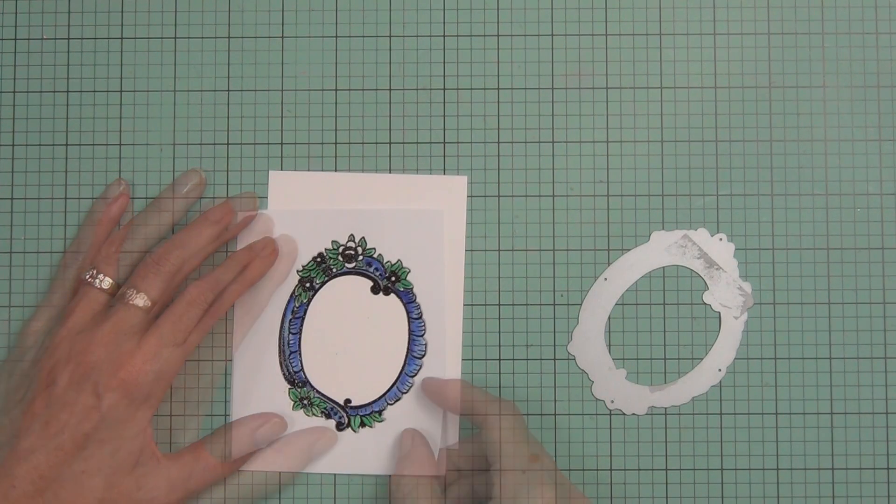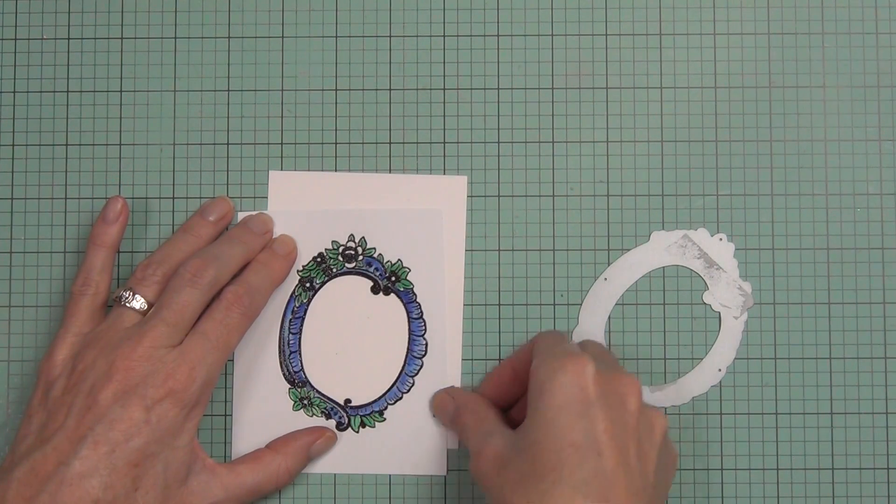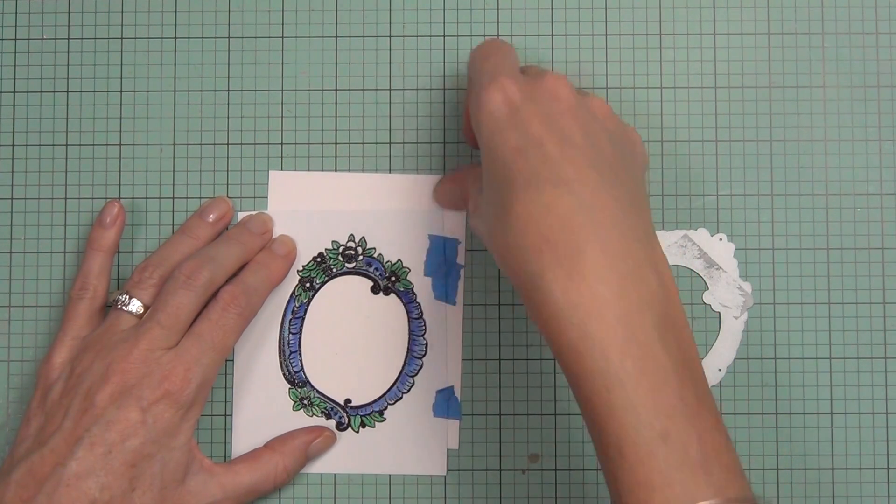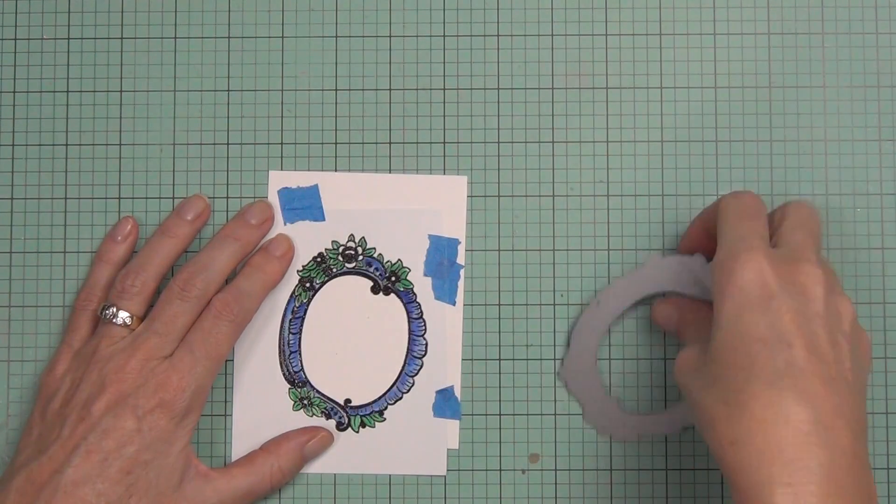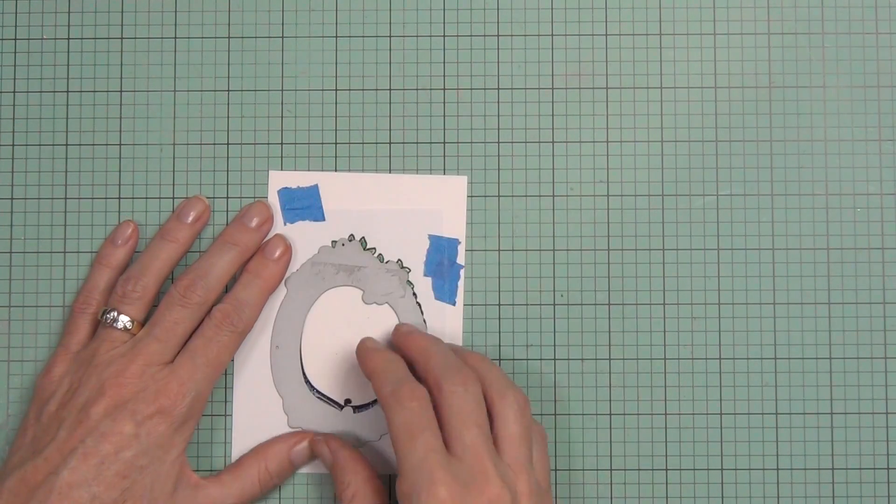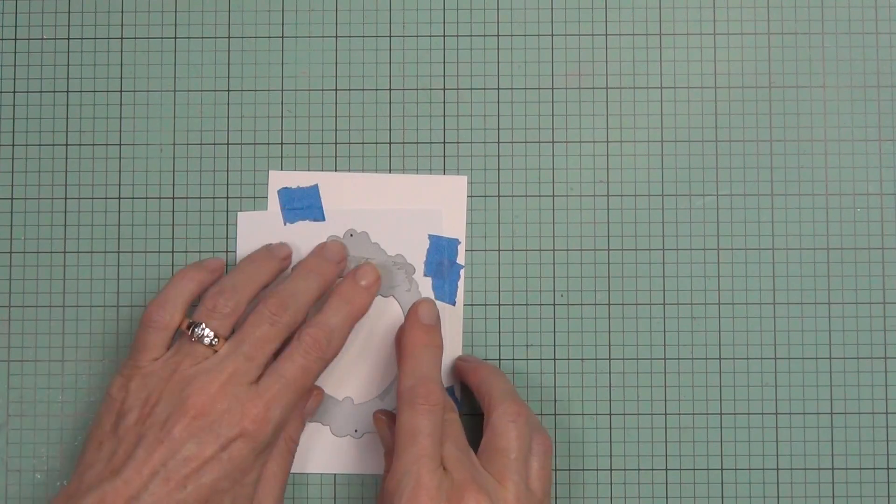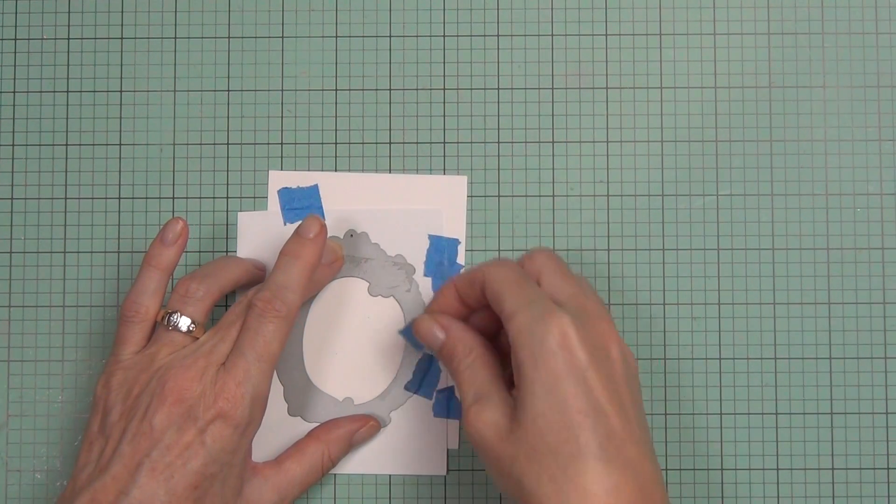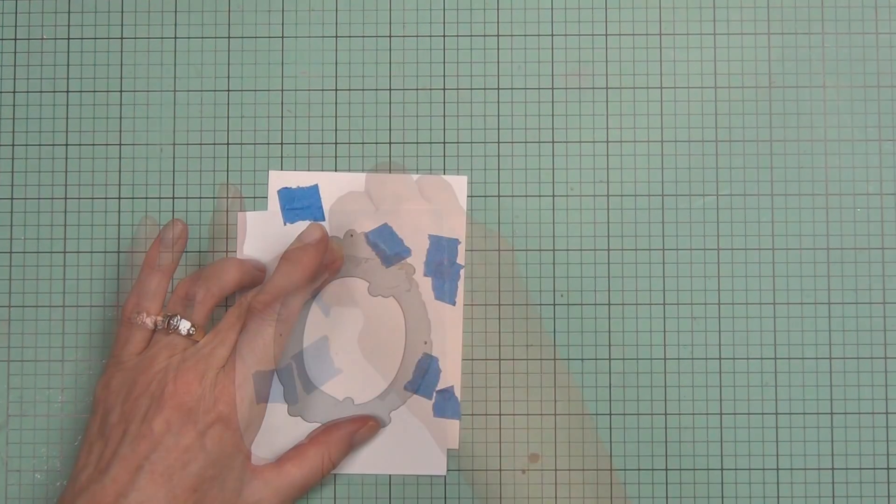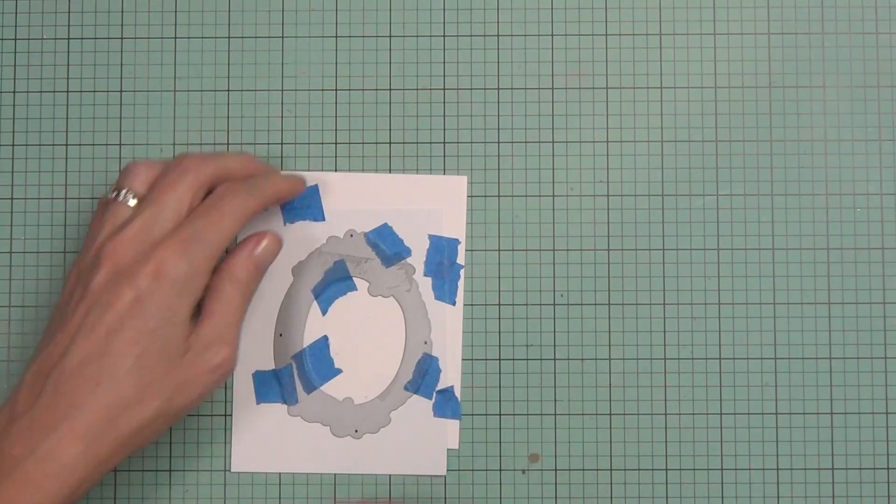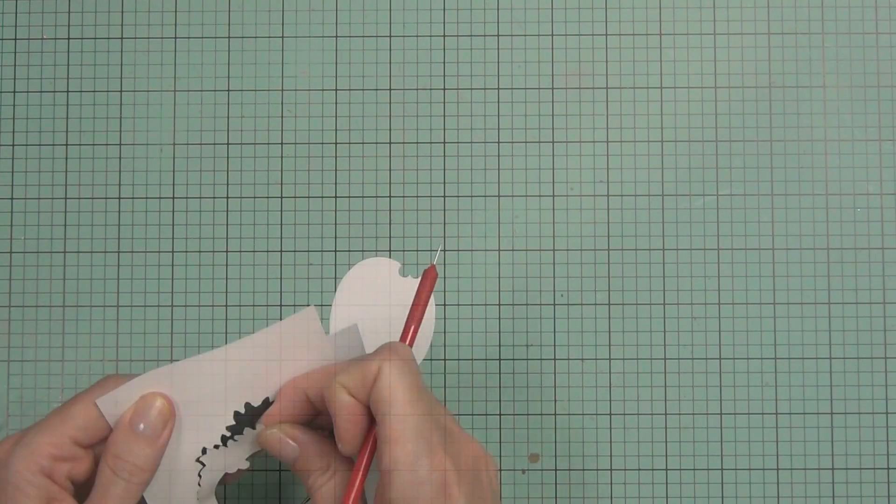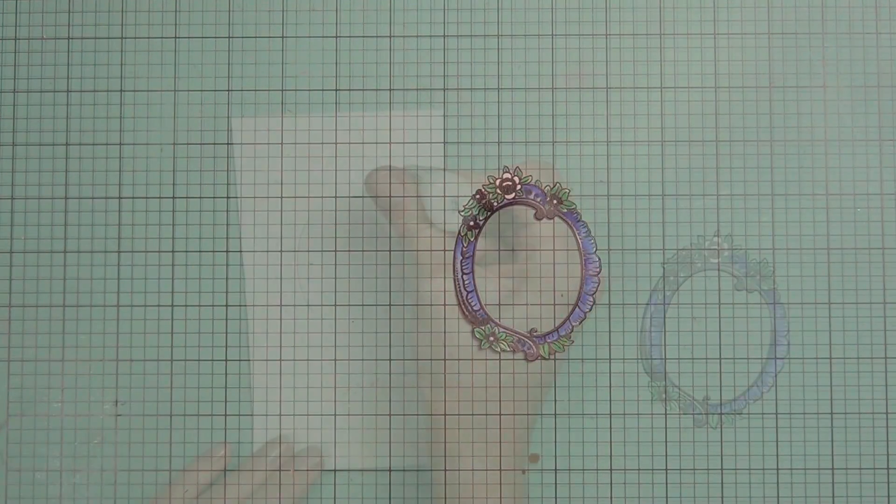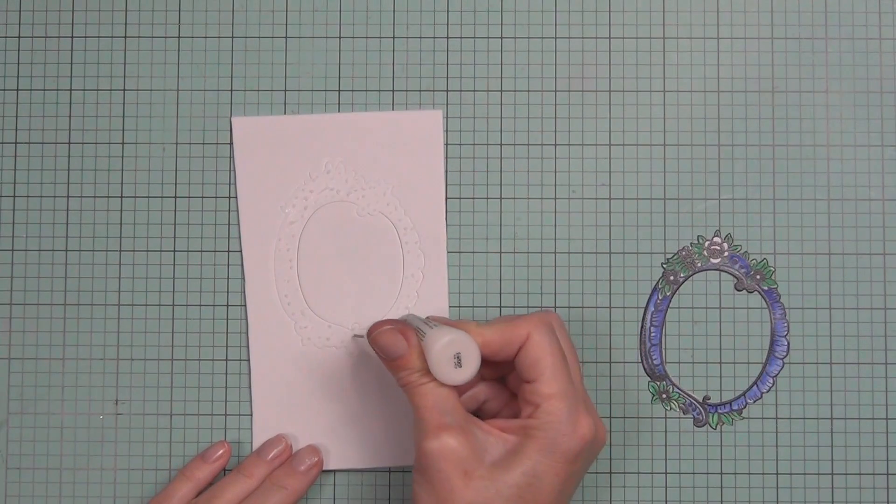This frame has dried now. I want to die cut my frame. The coordinating die is a solid die, so I've cut it out of a piece of scrap cardstock and lined it up over top of my image. I can just adhere my two pieces of cardstock together and adhere my die in place before I run it through my die cutting machine. This is a fabulous die—it actually cuts right up to the very edge of the image. There's no white border at all.